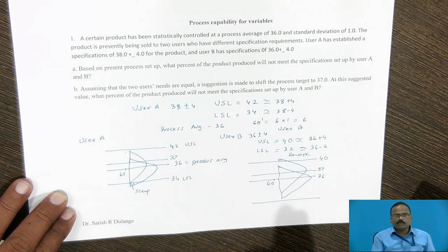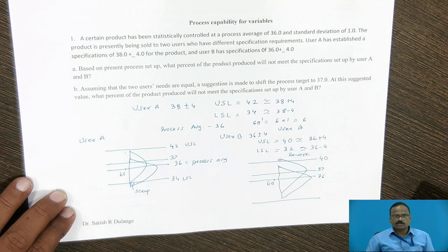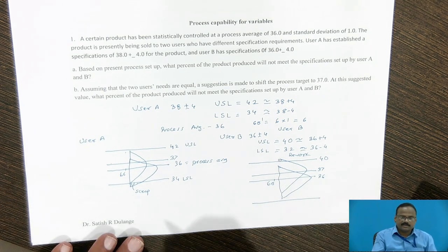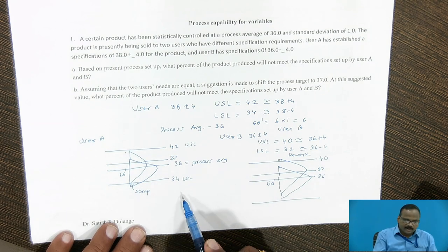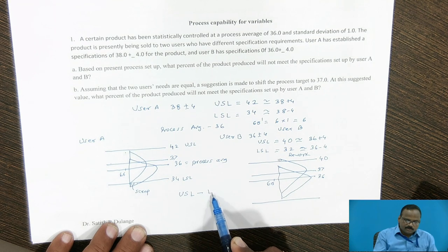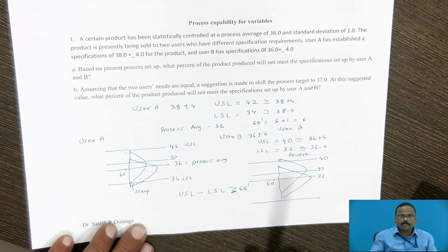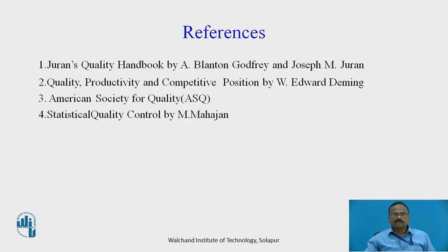Based on that, we can calculate the percentage of components coming above the upper specification or below the lower specification limit. In a nutshell, for the process to be capable, USL minus LSL should be greater than Six Sigma Dash. These are the references used for creating this video.